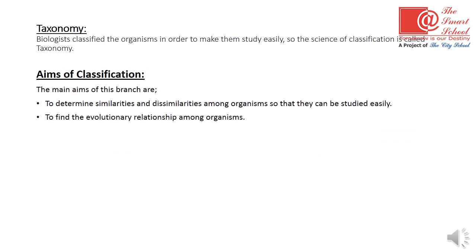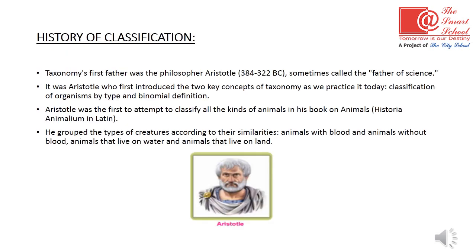Biologists classified organisms in order to make them easy to study. The science of classification is called taxonomy — it is a branch of biology in which we classify organisms. The main aims of this branch are: to determine similarities and dissimilarities among organisms so that they can be studied easily, and to find the evolutionary relationship among organisms.